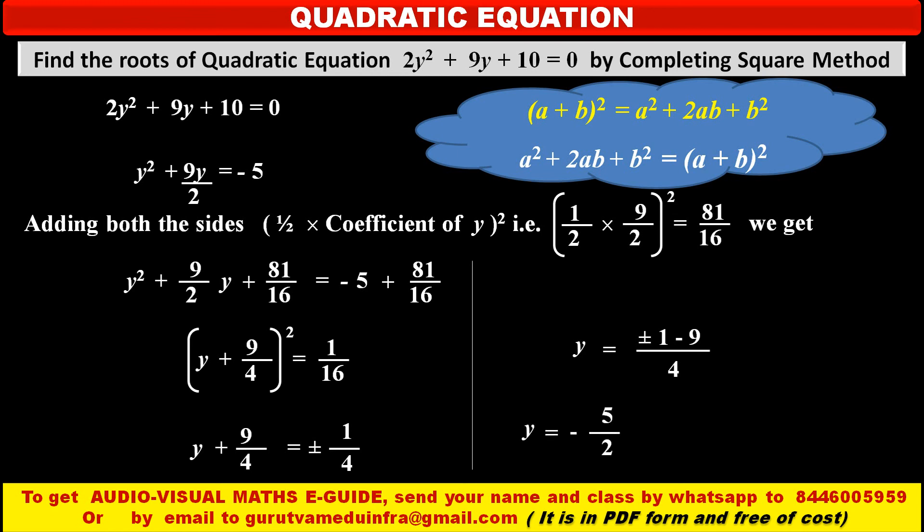Because of the ±1, we get two values of y. The first value is y = (-1 - 9) / 4 = -10/4 = -5/2. The second value is y = (1 - 9) / 4 = -8/4 = -2. So the two roots of the equation are y = -5/2 and y = -2.